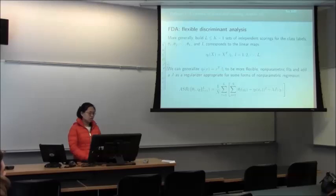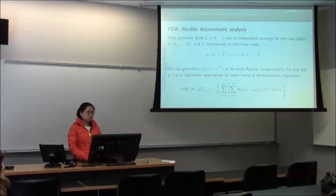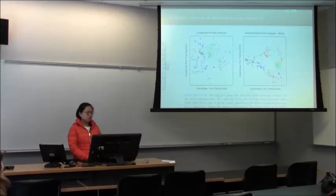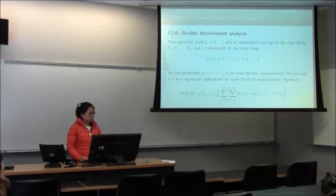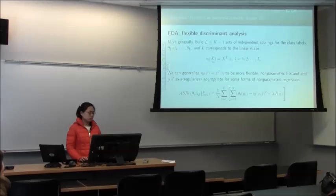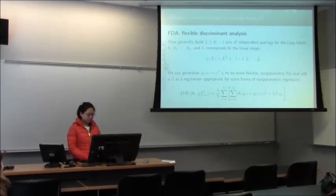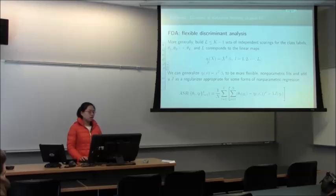Flexible discriminant analysis is just like usual discriminant analysis plus a penalty, which penalizes some directions toward zero. In linear discriminant analysis with no penalty, coordinate one is eta-1-hat(x_i) corresponding to theta-1, and coordinate two is eta-2-hat(x_i) corresponding to theta-2, up to coordinate L corresponding to theta_L.